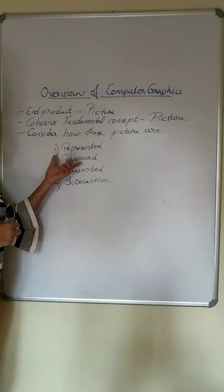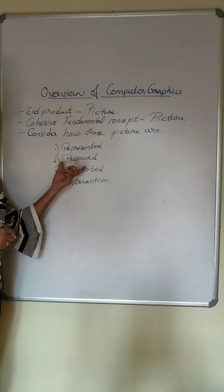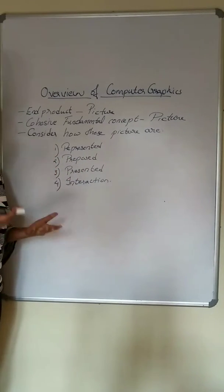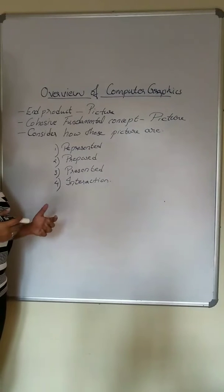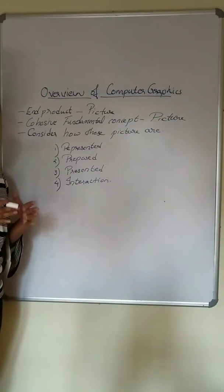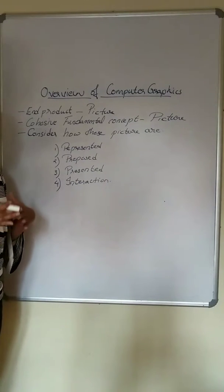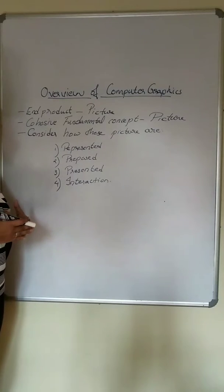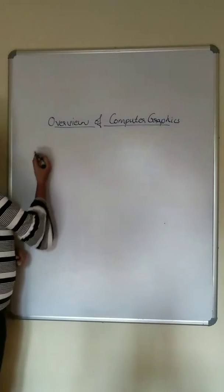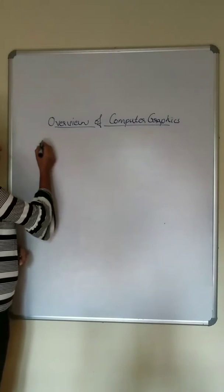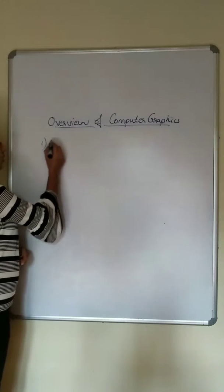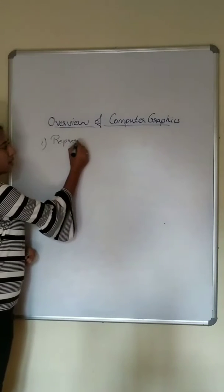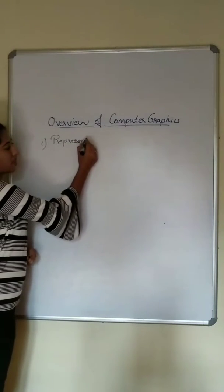The four things are: how the pictures are represented, how the pictures are prepared, how they are presented in Computer Graphics, and how the interaction with the picture is accomplished by the user. The first one is representing the pictures.